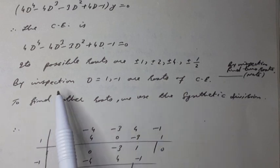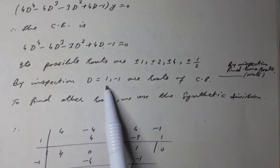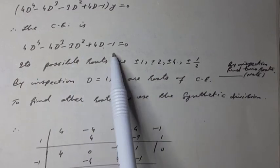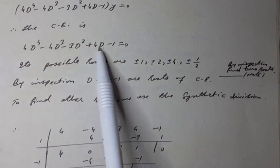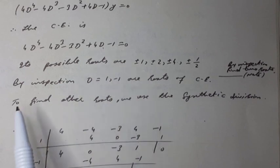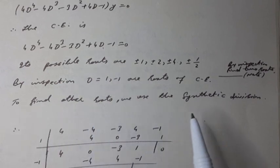By inspection, we see that d equals one and minus one are roots of this characteristic equation because one satisfies it and minus one also satisfies it. To find other roots, we use synthetic division.